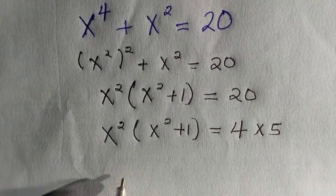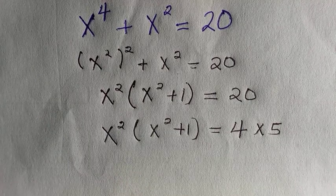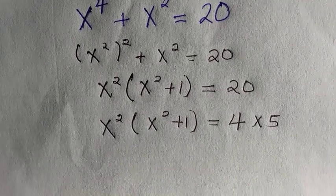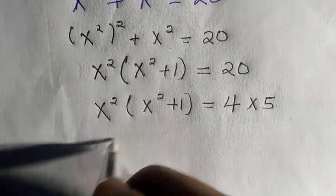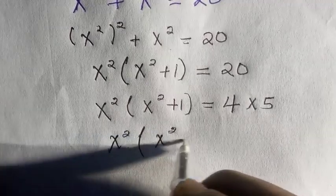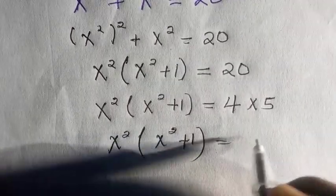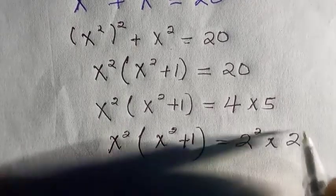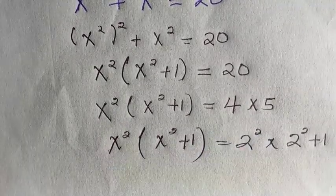If I write this as x squared, bracket x squared plus 1, equals... here is 2 to power 2, right, multiplied by... if this is 2 to power 2 plus 1 as well. So if I consider this x as 2, then the raised to power is also the same thing.